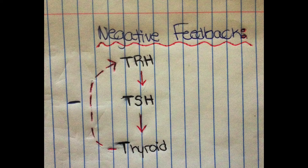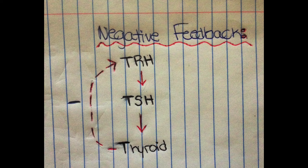Negative feedback is a process in which the product of a reaction goes back and inhibits the original reaction that produced it. In this image, the concept is being applied to thyrotropin-releasing hormone, which is produced by the hypothalamus, as was shown in the previous slide. TRH causes the anterior pituitary to secrete thyroid-stimulating hormone, TSH, which then causes the thyroid to release thyroid hormone, T3 and T4. Thyroid hormone then goes back and inhibits the secretion of TRH from the hypothalamus, which also will inhibit the secretion of TSH and thyroid hormone.